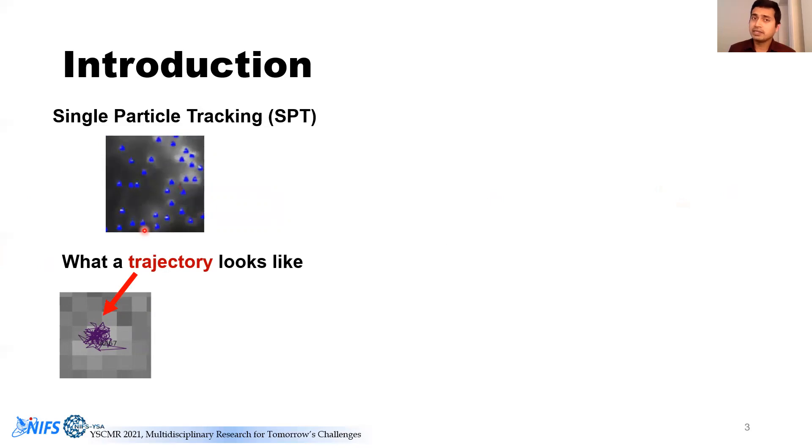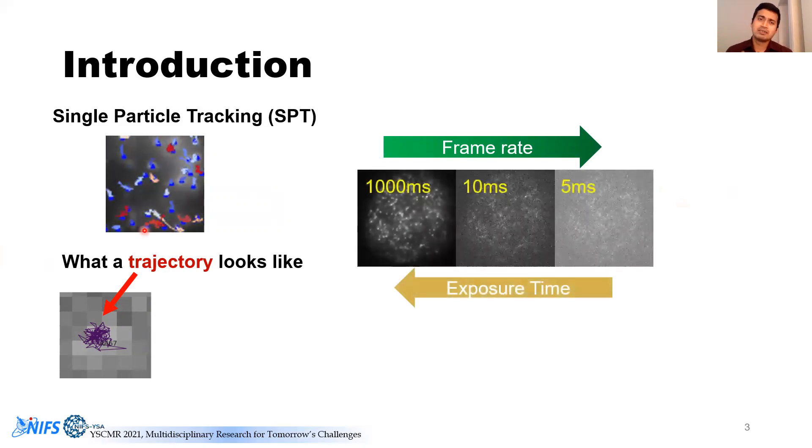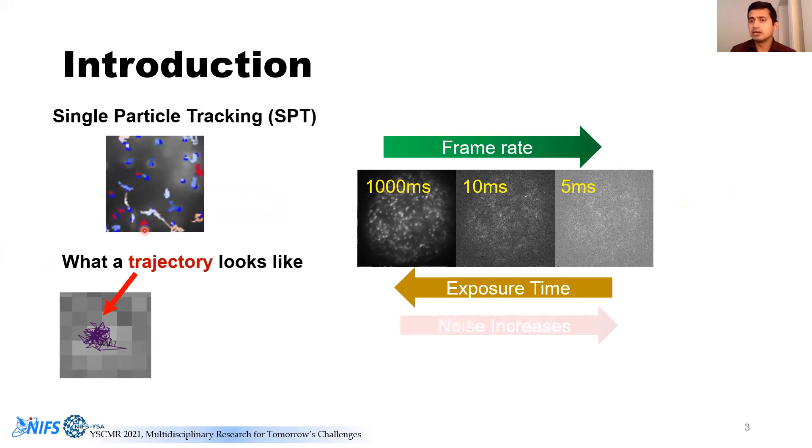A common problem that we have is that when we want to observe very fast moving particles, we want to go for higher frame rates, which means the camera speed is going to increase. As you go for higher frame rates, this is a flaw in every camera, you lose on exposure time. When you lose on exposure time, the noise of the images increases. And when you have high noise, it is impossible to do any tracking. As you see here in this five millisecond photograph, there's nothing much you can track out of it compared to its thousand millisecond photo.